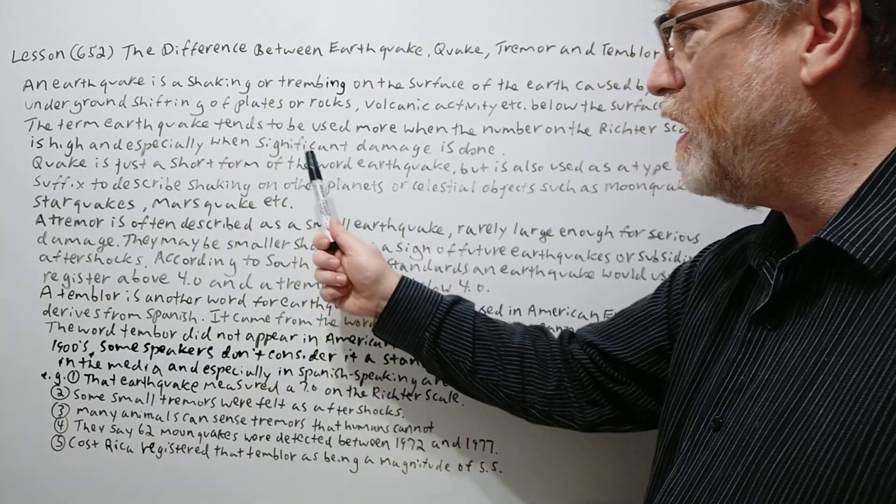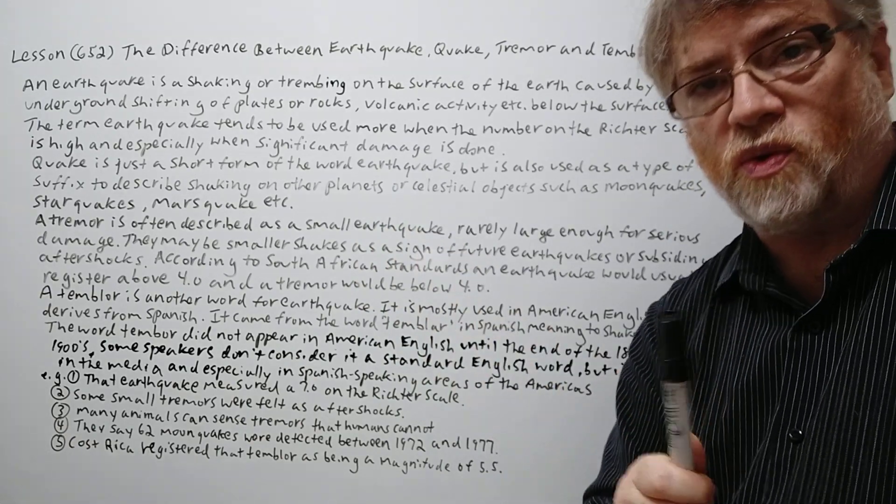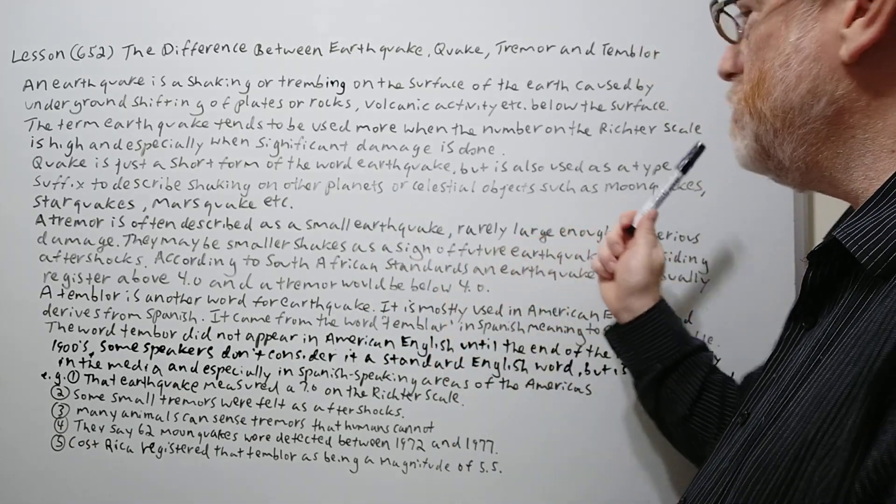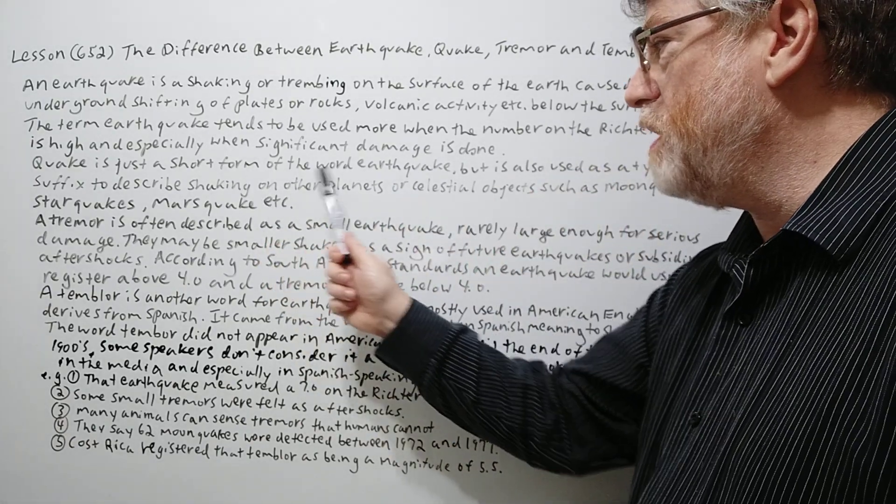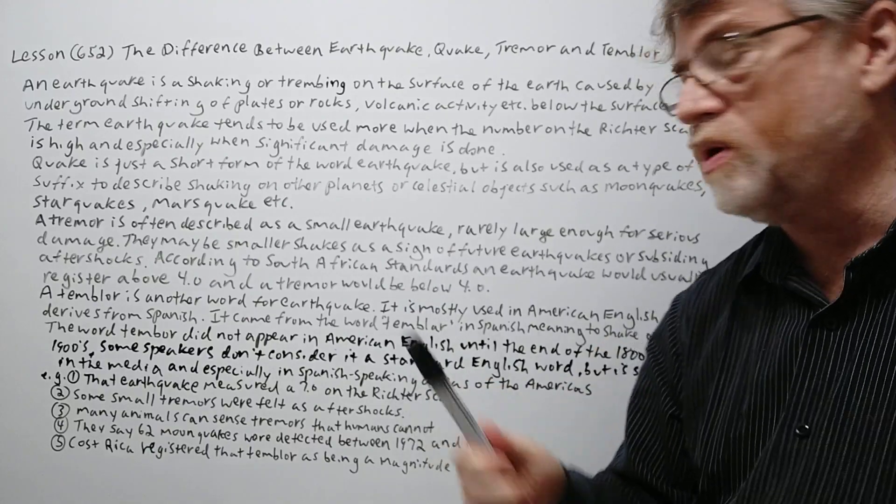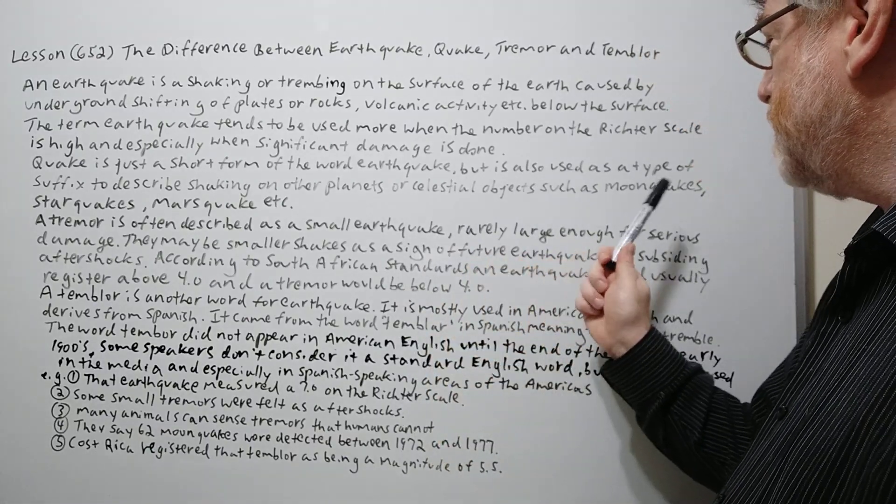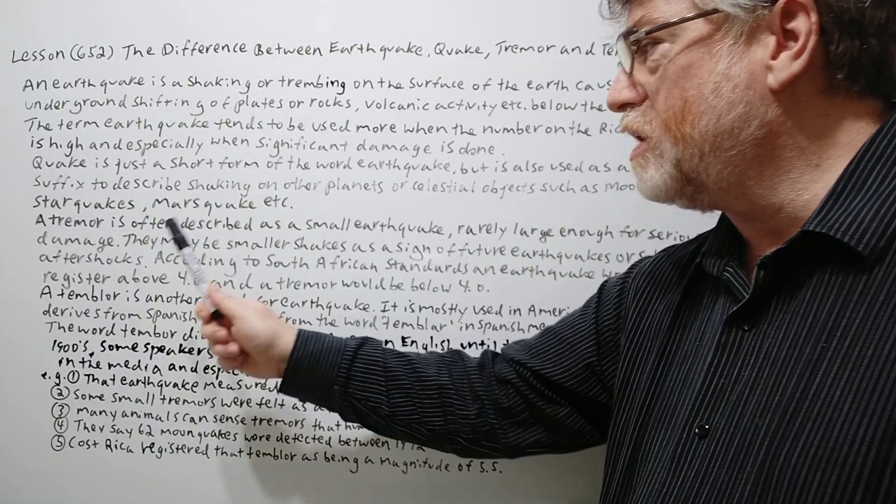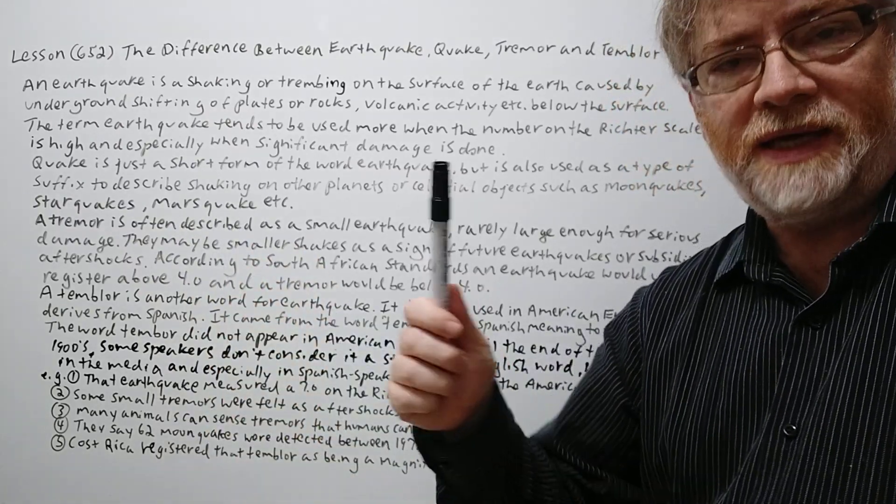Quake is just a short form of earthquake but is also used as a type of suffix to describe shaking on other planets or celestial objects such as moon quakes, star quakes, Mars quakes etc.